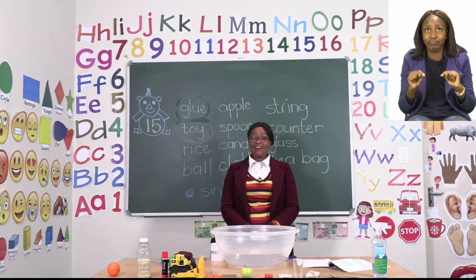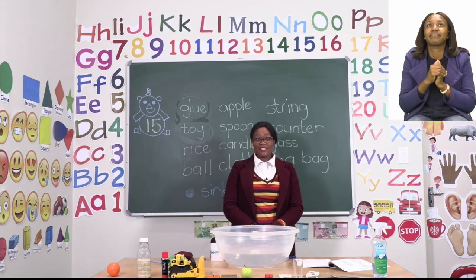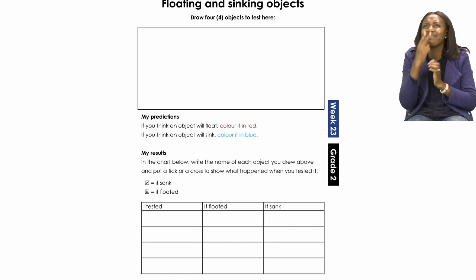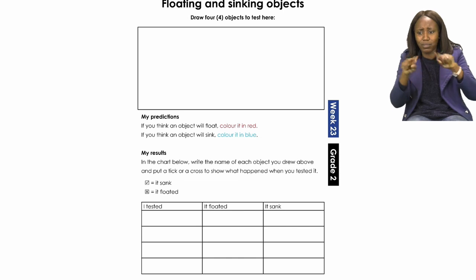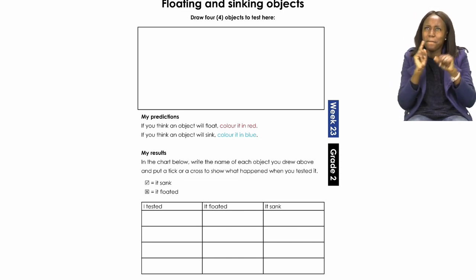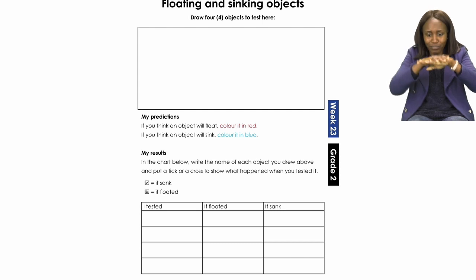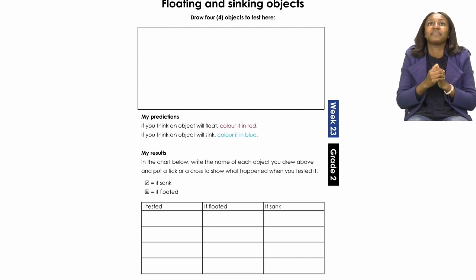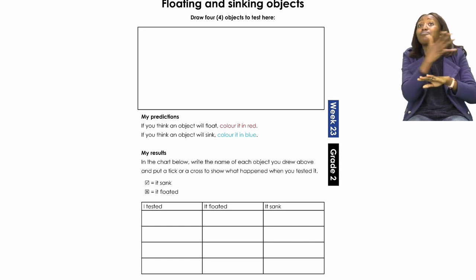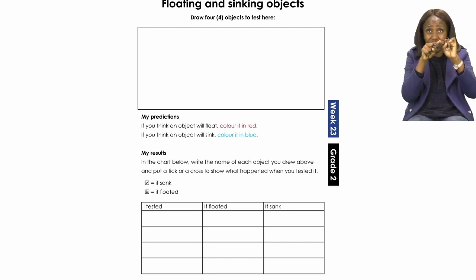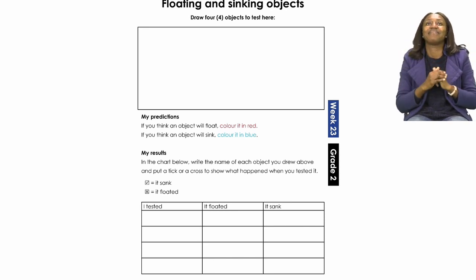We are going to start our lesson on page 15. On page 15 we are going to be doing something so exciting — it's going to be our job to find out what floats and what sinks. The first thing you're going to do is draw at least four objects in the box. Those four objects must be things you're going to use to find out whether they are going to sink or float. Afterwards, you are going to color them. If you think the objects will float, color them red. If you think they will sink, color them blue.